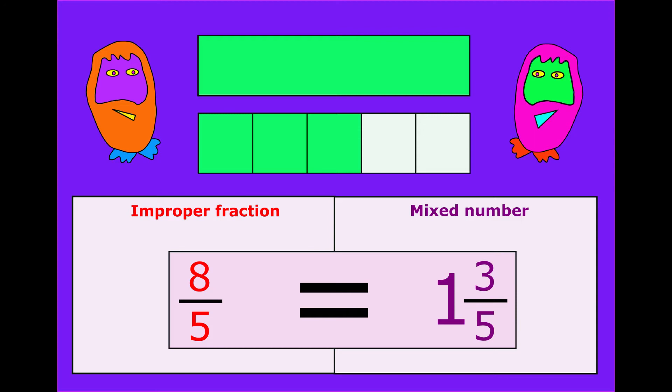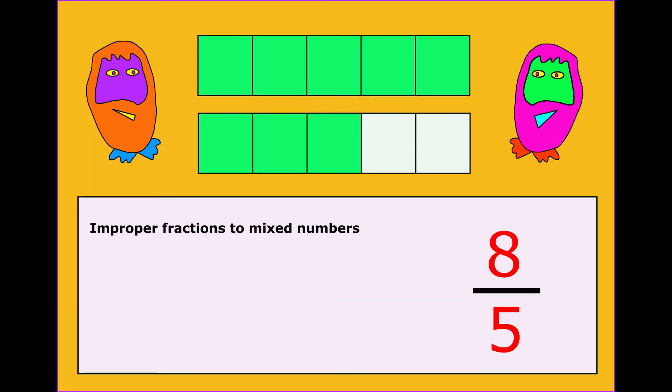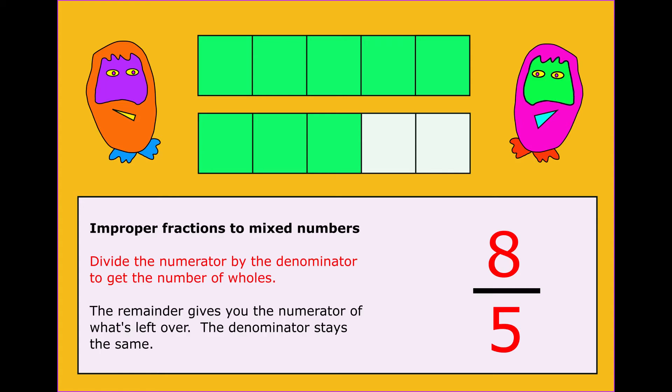So how can we change from one to the other? Let's take a look. To go from an improper fraction to a mixed number, first of all, divide the numerator by the denominator, and that will get you the number of wholes. In this example, we have eight divided by five, which gives me one with a remainder of three.